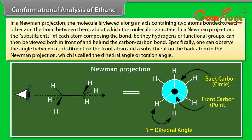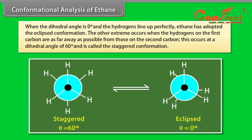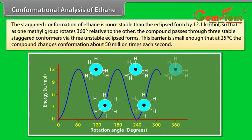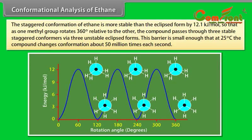In ethane specifically, we can imagine two possible extreme conformations. In one case, the dihedral angle is 0° and the hydrogens on the first carbon line up with or eclipse the hydrogens on the second carbon — this is called the eclipsed conformation. The other extreme occurs when the hydrogens on the first carbon are as far away as possible from those on the second carbon. This occurs at a dihedral angle of 60° and is called the staggered conformation. The staggered conformation of ethane is more stable than the eclipsed by 12.1 kJ/mol. So as one methyl group rotates 360° relative to the other, the compound passes through three stable staggered conformers via three unstable eclipsed forms. This barrier is small enough that at 25°C, the compound changes conformation about 50 million times per second.